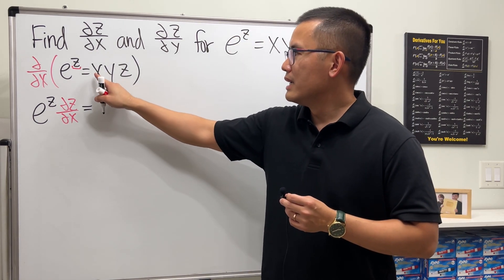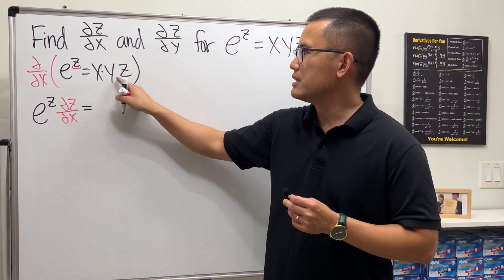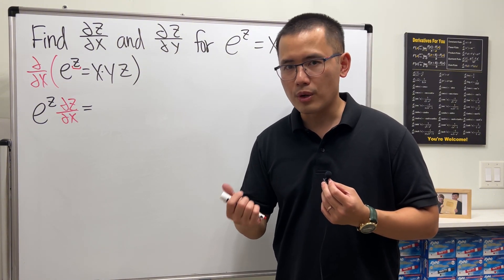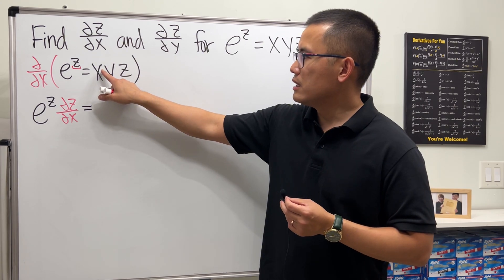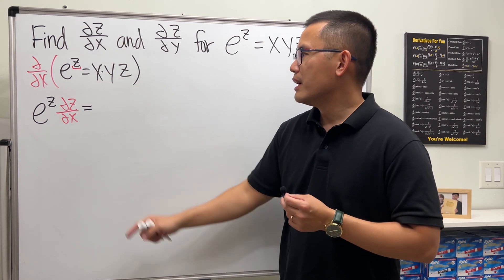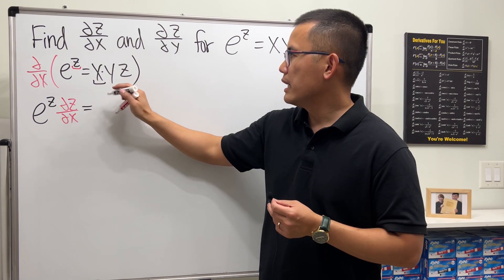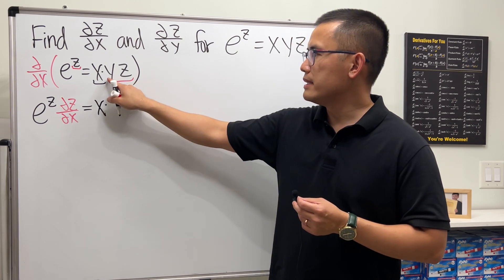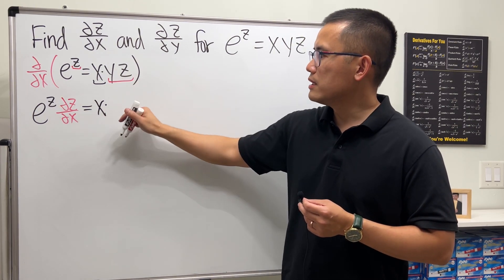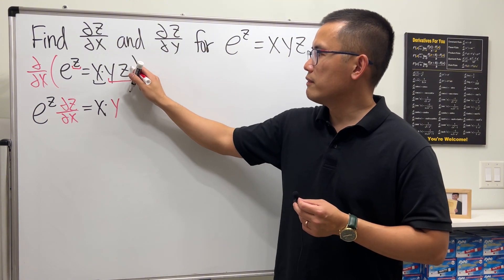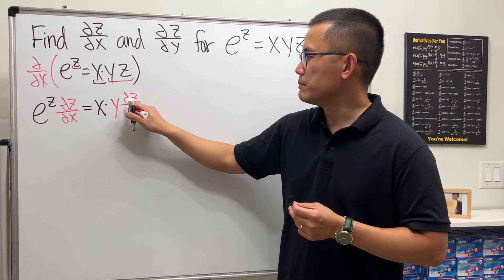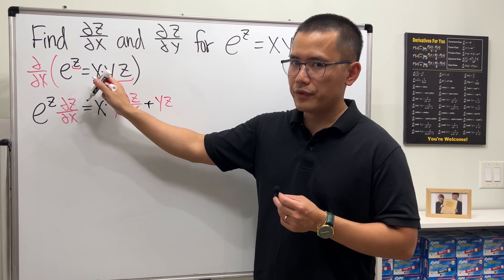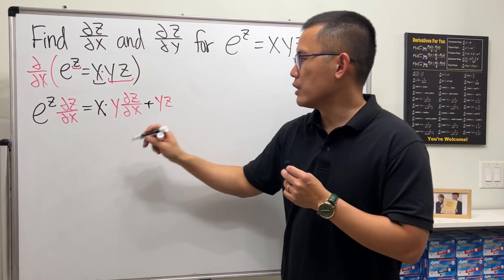Here's the tricky part — this is technically x times yz, so x is one function and yz is also a function. We will have to use the product rule. Treating x as the first function and yz as the second function: keep the first function and multiply by the derivative of the second. Y is just a constant, so the derivative of z gives us partial z with respect to x. Then add the second function yz times the derivative of the first — the derivative of x in the x world is just 1.